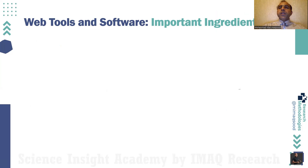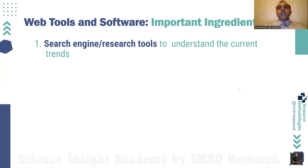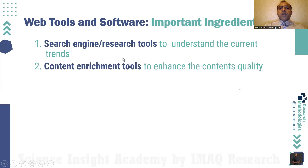These are also related to web tools, because web tools are the important ingredients for researchers. A researcher is going to write a story, and this story needs several steps. The first and most important kind of tools an author requires are search engines or research tools, because these tools tell us what the rising trend is right now, what the research community is working on, and what the demand is — so an author can provide a supply. The second important tool is content enrichment tools.